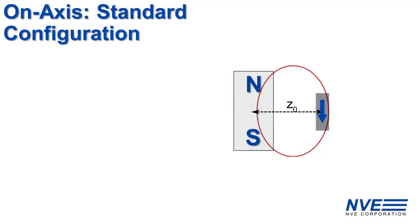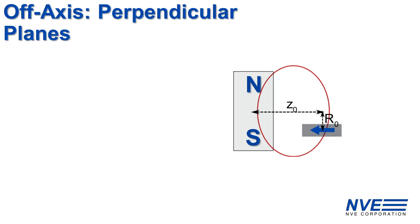The second off-axis configuration is equally versatile. We start with the standard on-axis configuration, rotate the sensor 90 degrees, and move the sensor off-axis a distance R0 radially.